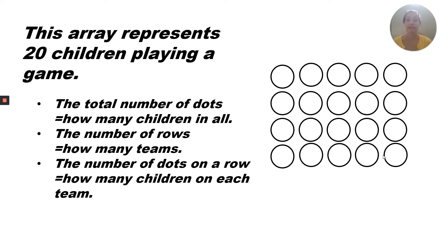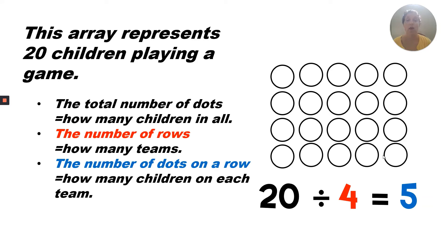This array represents 20 children playing a game. The total number of dots equals how many children in all. The number of rows equals how many teams. The number of dots on each row represents how many children are on each team. We can make a division equation from this array by starting with how many children in all — there are 20 children playing a game. We're going to divide it by the number of rows, or the number of teams.